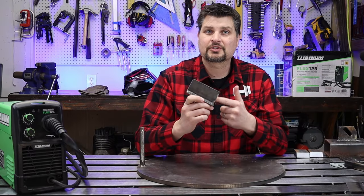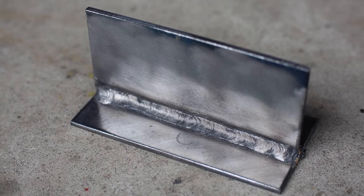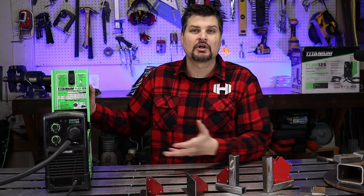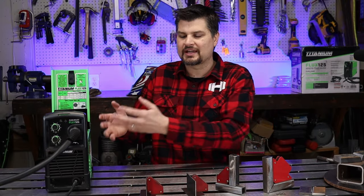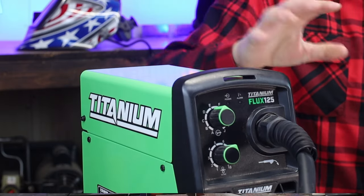These fillet welds turned out great. The Titanium 125 is perfect for 1/8 inch material. If you want to know more details about the welder itself, check out my other videos. I've got setup videos, unboxing, and even some tips and tricks videos to help you out.